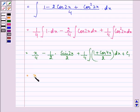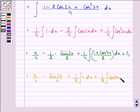So we have x by 4 minus sin 2x by 4 plus 1 by 8 integral of 1 into dx plus 1 by 8 into integral of cos 4x dx plus c1.